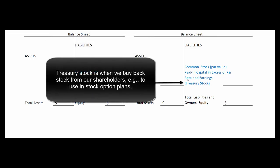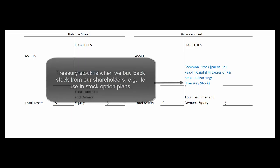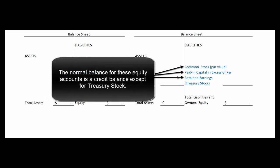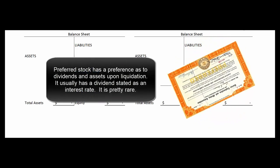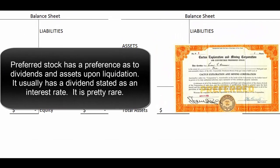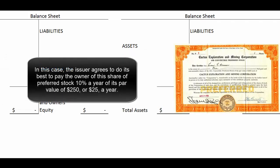Treasury stock is when we buy back our shares from somebody else — maybe we think our stock is trading at too low a price, or we need shares for officer stock option programs. This account has a debit balance while all the other equity accounts have credit balances. We might also sell preferred stock; in accounting class we discuss it often, but it isn't that common in practice. Preferred stock looks like a bond — it has an interest rate attached, and par value actually means something for preferred stock, whereas with common stock it's a meaningless number.